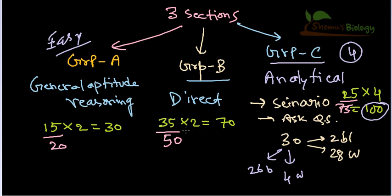Group B is slightly problematic and Group C is difficult because it requires analytical power — if you just mug up answers you probably won't get through Group C. However, remember that questions in both Group B and C are based on basic concepts. The peppered moth example I gave uses the basic concept of natural selection; if you understand natural selection and its types, you can answer it clearly.